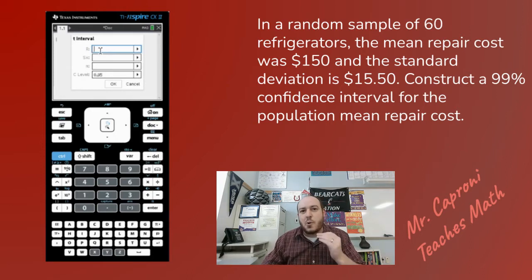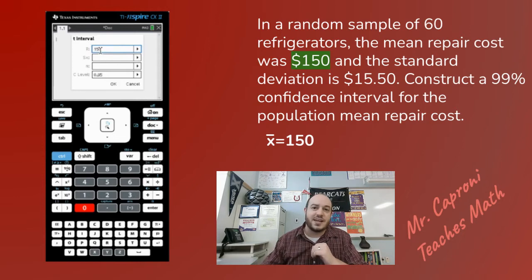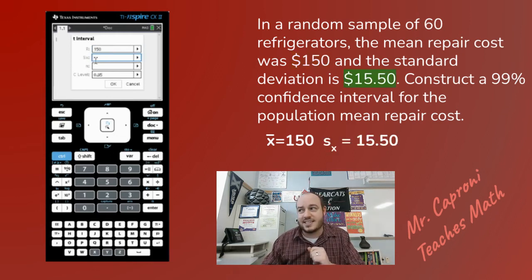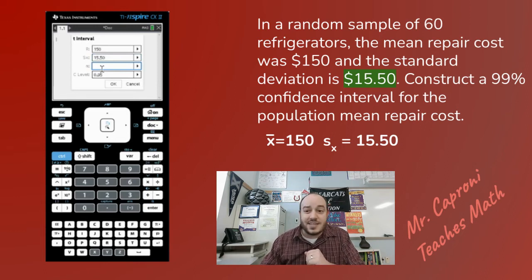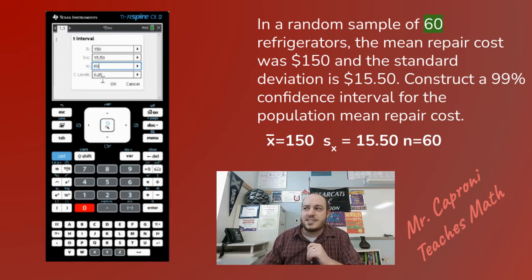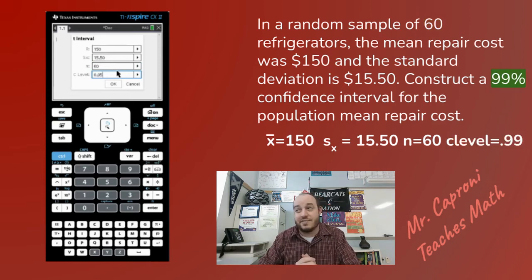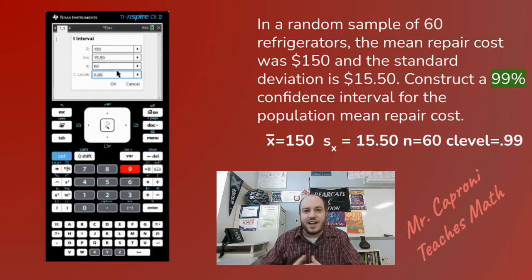X-bar is the sample mean, which in this case was $150, so enter 150. Sx is the sample standard deviation, which is $15.50. N is your sample size — there were 60 refrigerators, so enter 60. Finally, the C-level defaults to 0.95, but we're constructing a 99% confidence interval, so delete the 0.95 and enter 0.99. Whatever your percent of confidence is, put it in as a decimal.